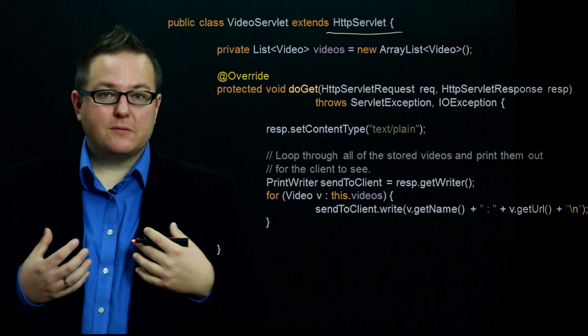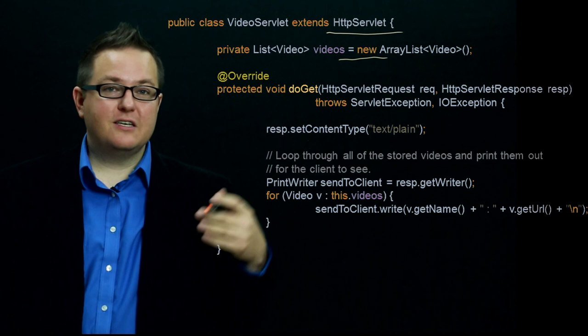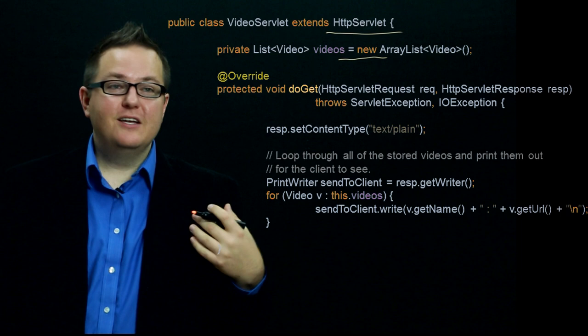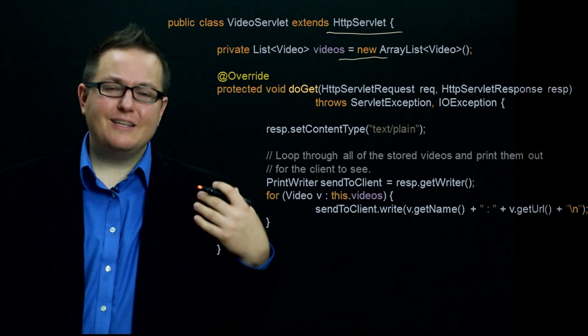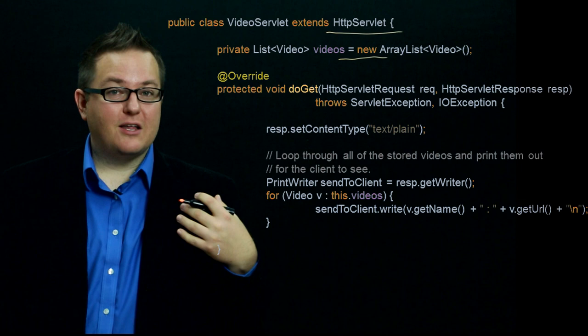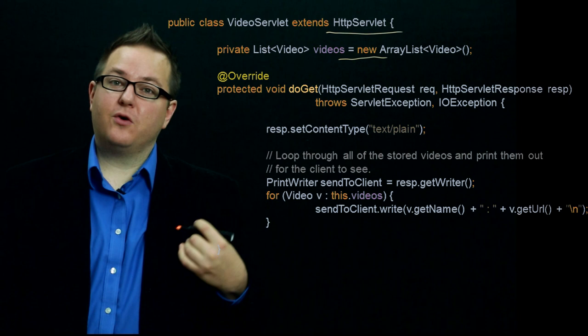Our servlet has a list of videos that have been sent to the server. This is obviously a very simple example — we're only storing things in memory, so if you shut the server down the servlet won't remember what videos were uploaded. We want to start simple to understand what servlets give us and their limitations, which will motivate using the Spring framework later. Videos are simply objects that track a video's name, URL, and duration.